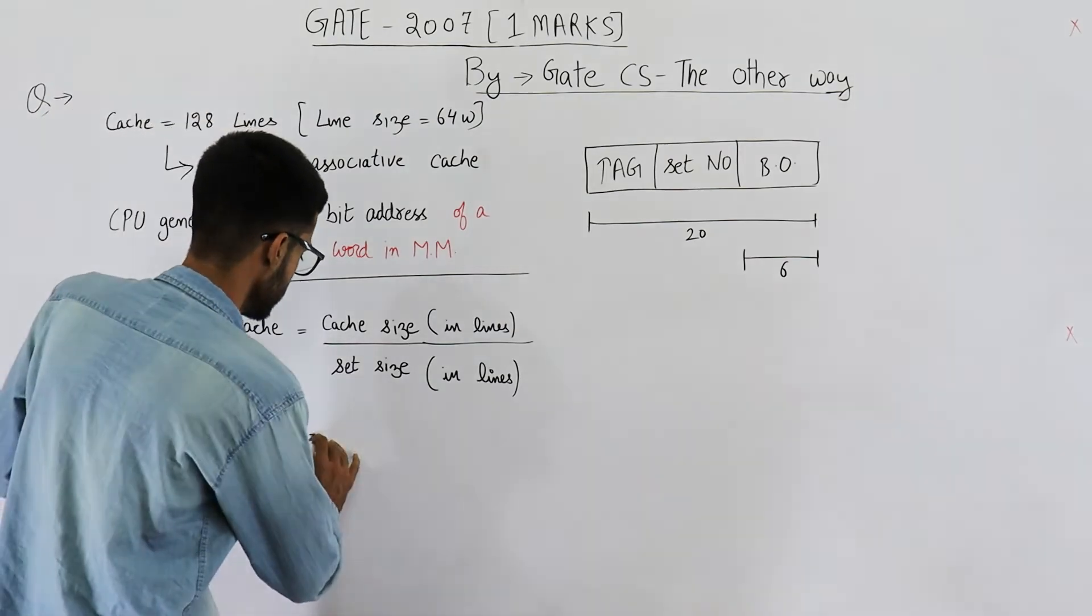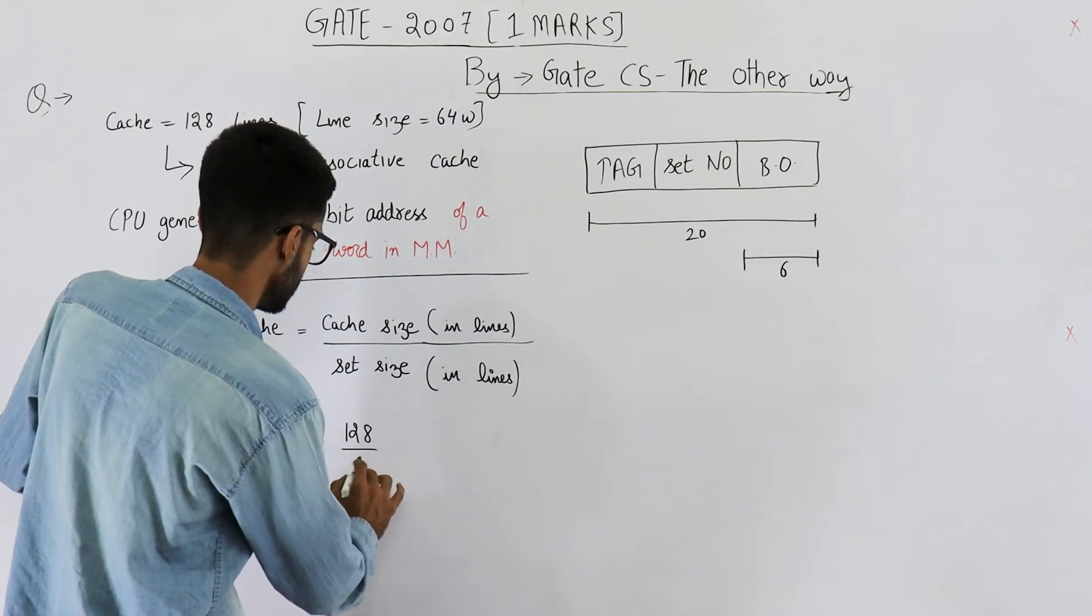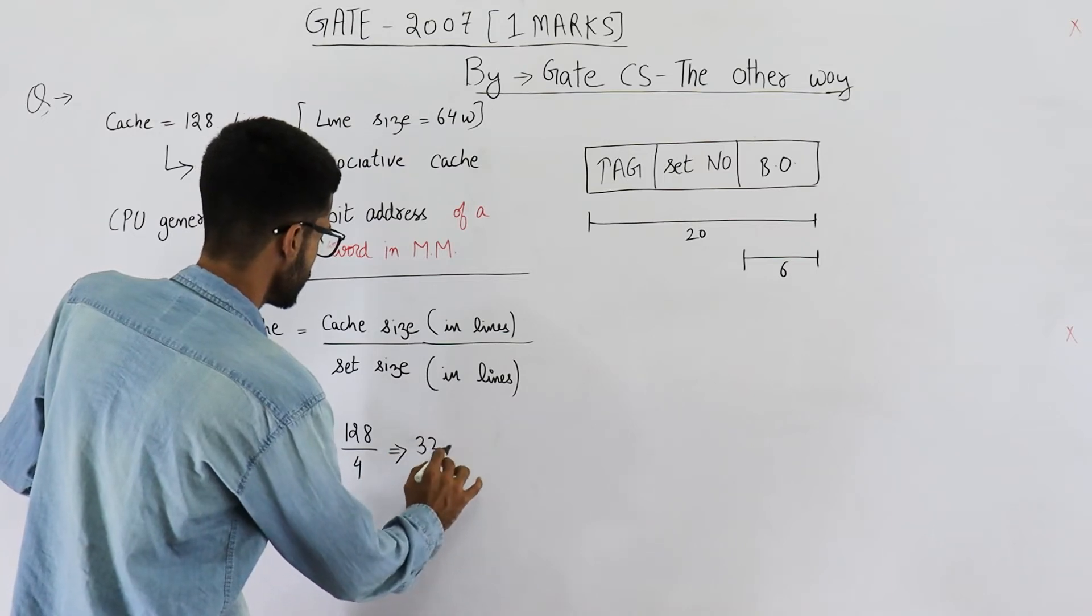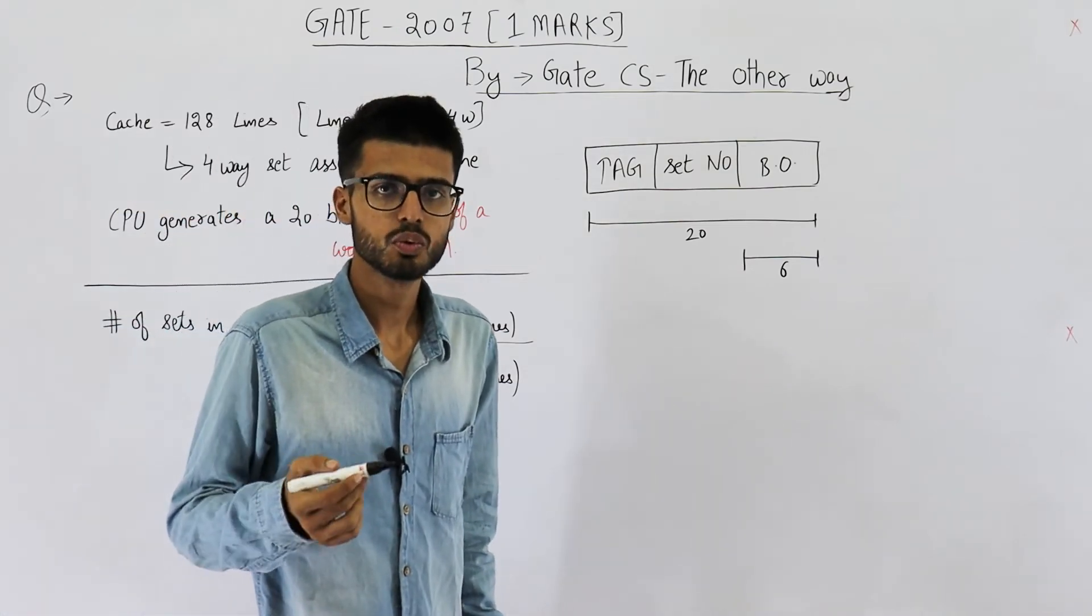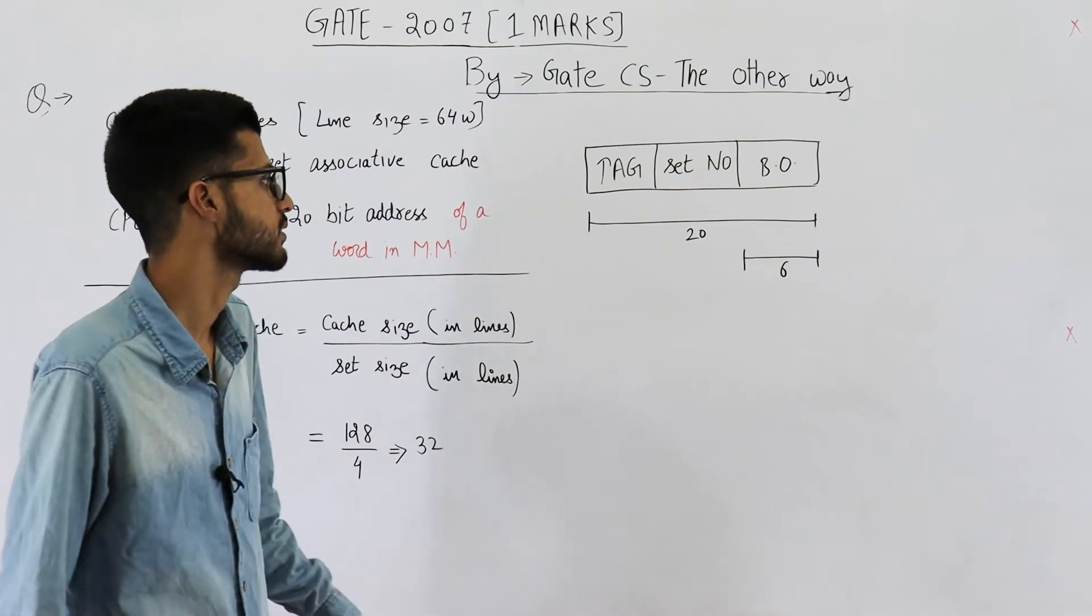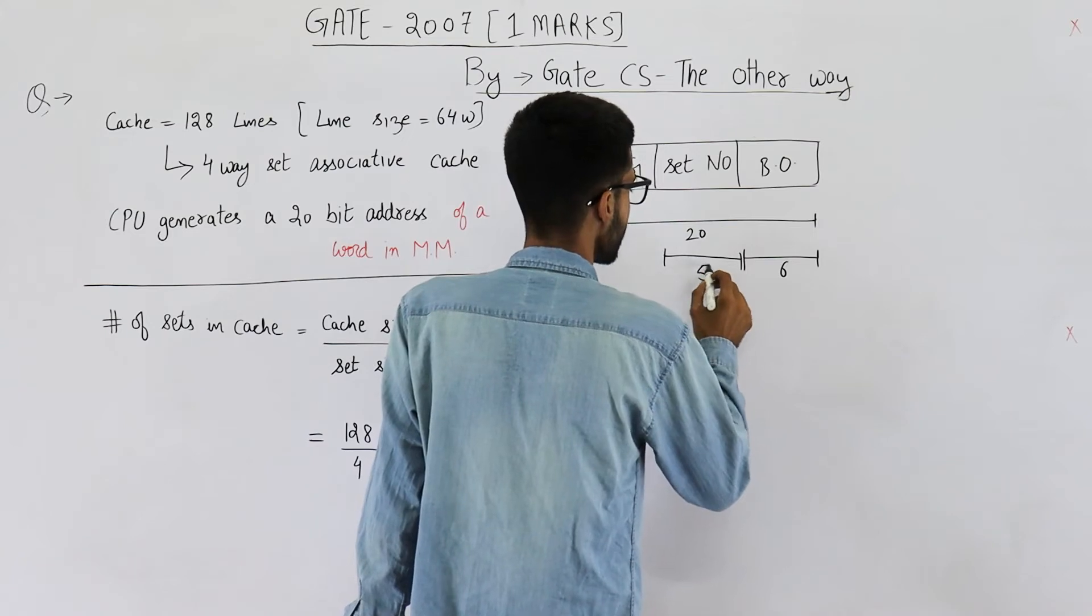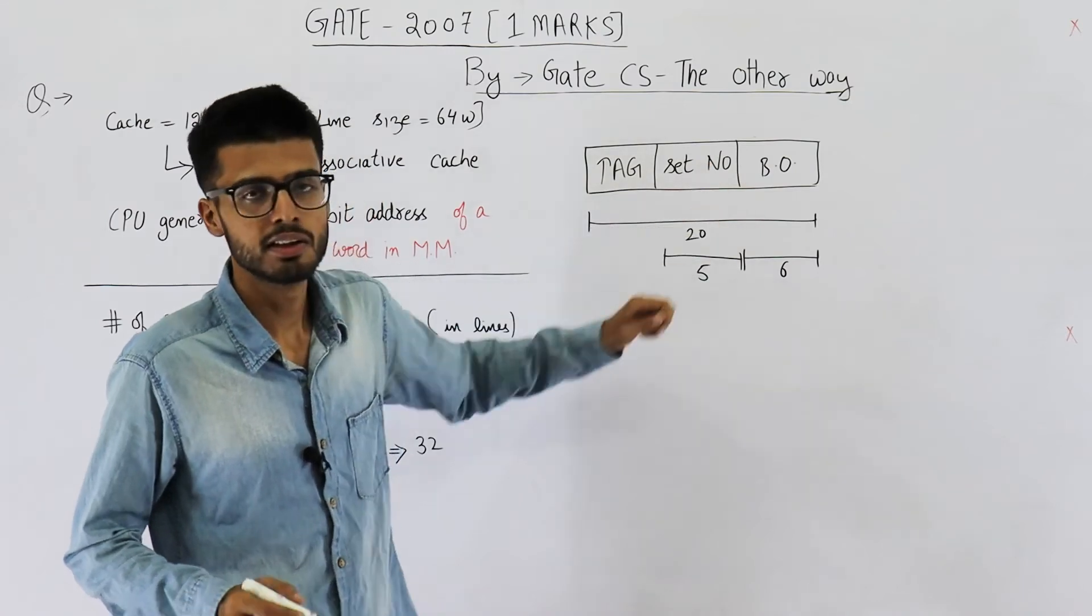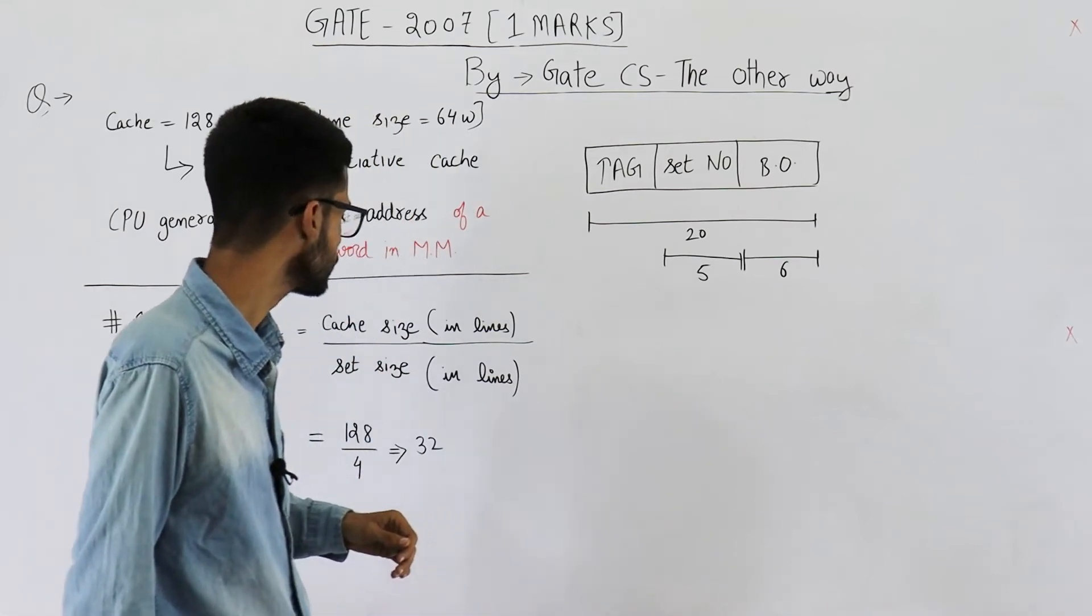So this comes out to be 128 divided by 4. This will be 32 because 128 is 2 raised to the power 7, 4 is 2 raised to the power 2. So we will be left with 2 raised to the power 5 which is 32. That means set number will be of 5 bits, because this field needs to identify one of the total 32 sets present in cache.